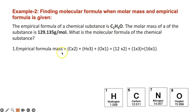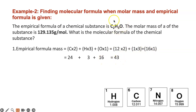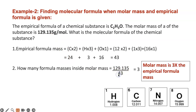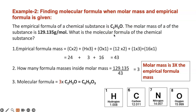Here's the empirical formula mass calculation. You have carbon times 2, hydrogen times 3, and oxygen times 1. Using rounded atomic masses — carbon is 12, hydrogen is 1, and oxygen is 16 — when you add those up you get 43. So the empirical formula mass is 43 grams per mole. Now you divide the molar mass by 43 to find the factor, and you get 3. That means the molar mass is 3 times the empirical formula mass. So you multiply the empirical formula by 3 to get the molecular formula, and that is your answer.